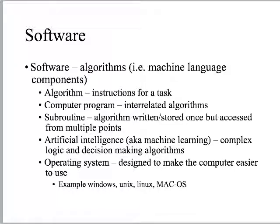Subroutines are algorithms written and stored once but accessed from multiple points — a key part of how machine languages work. These are stored in subroutine libraries that code can call up. For example, HTML is a machine language, and any time you click a link, it accesses a library that tells the computer what should happen. You don't have to repeat that complicated code every time — it's stored in the library, and every one of the trillions of links on the internet accesses that same point.